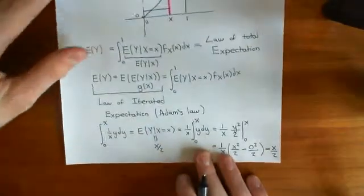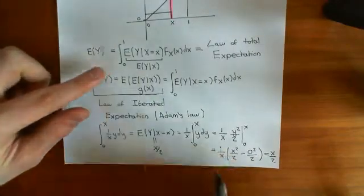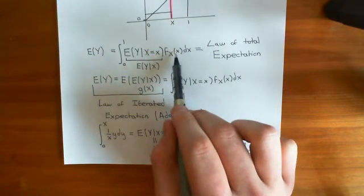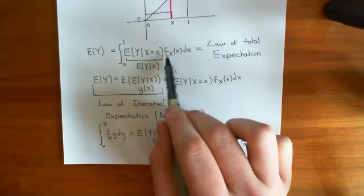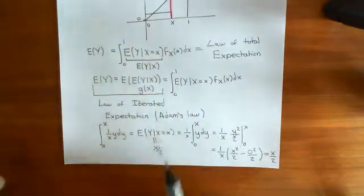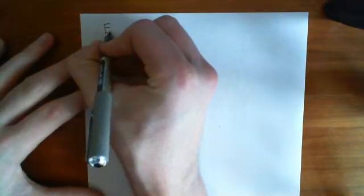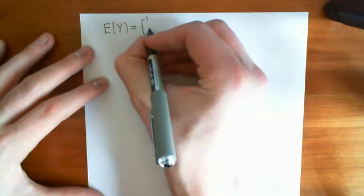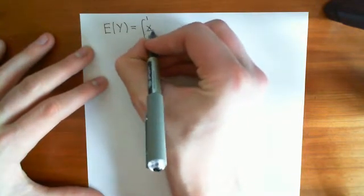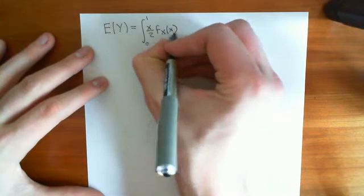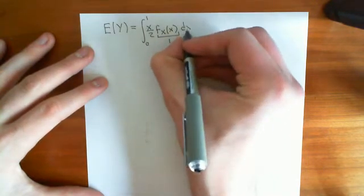Now we substitute that back into the law of total expectation, along with the probability density function of the random variable X — the PDF for where the first break is made — which we agreed is uniformly distributed on the interval 0 to 1, so that PDF is just 1. So the expected value of Y is the integral from 0 to 1 of the conditional expectation x over 2, times the marginal PDF of X which equals 1, integrated with respect to x.